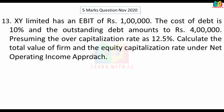Now let's look at the net operating income approach. We need to calculate the value of the firm and the equity capitalization rate. The cost of debt is 10% and debt is 4 lakh. Overall capitalization rate is 12.5%. The formula is very easy: EBIT divided by Ko.